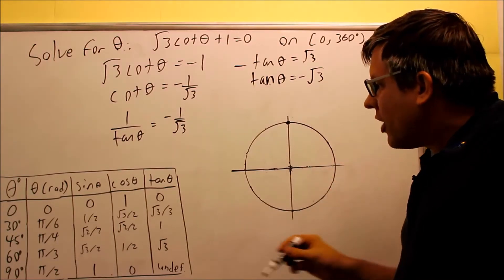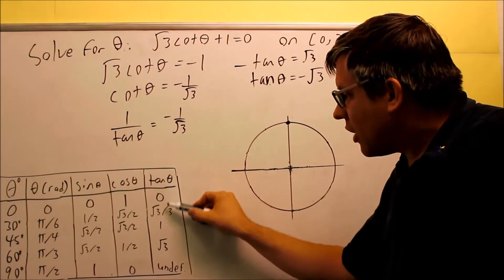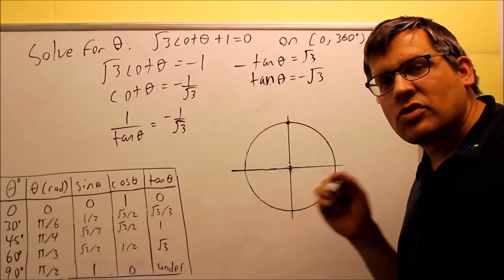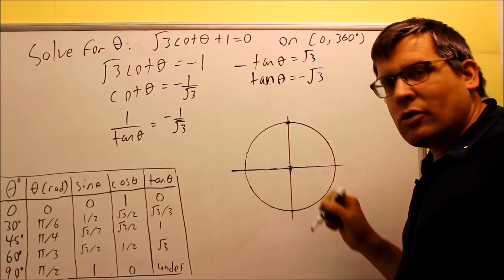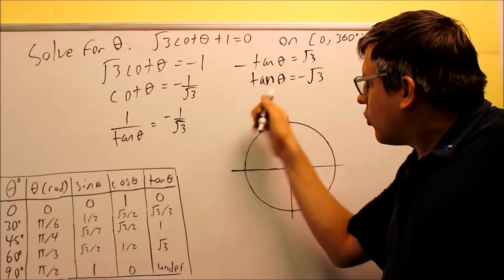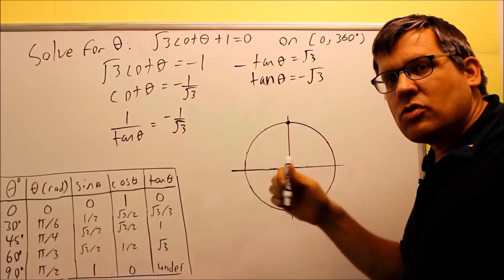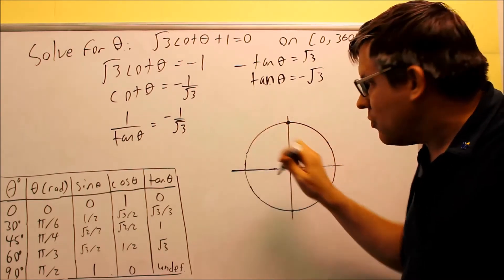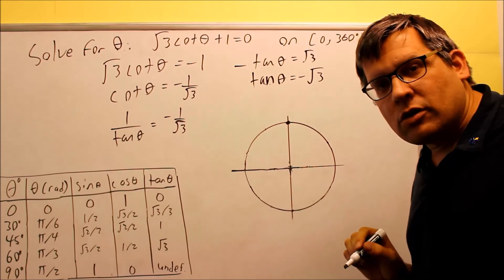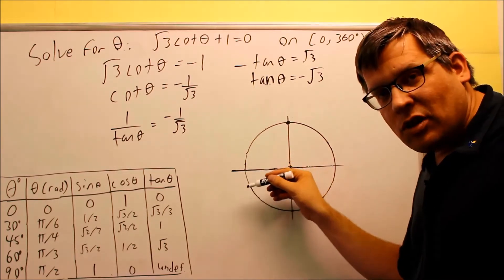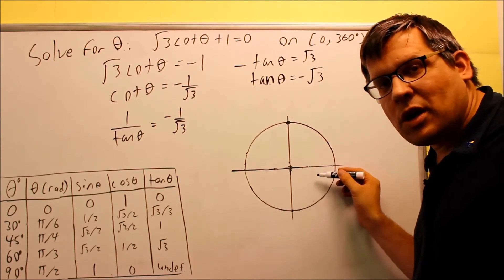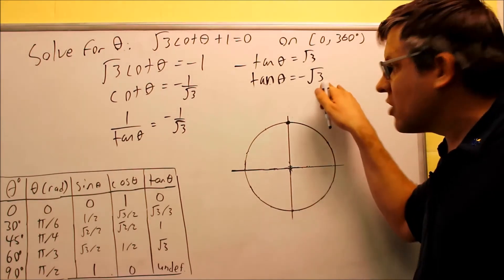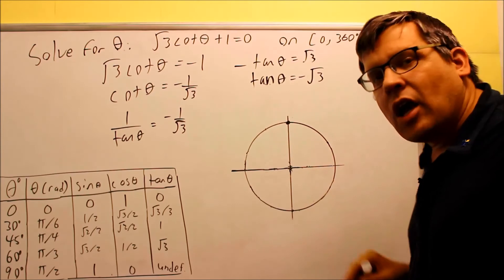The square root of 3 — we want to find that value on our table. If we go down the tangent column, we find that square root of 3 goes along with 60 degrees. So 60 degrees is the reference angle we're going to use. Now I need to find out which quadrants to draw those in — I want to find the quadrant where tangent is negative. Using the 'all students take calculus' rule: in quadrant 2, sine is positive and everything else is negative, meaning tangent is negative there. Tangent is positive in quadrant 3, and cosine is positive in quadrant 4. So tangent is negative in the second and fourth quadrants.